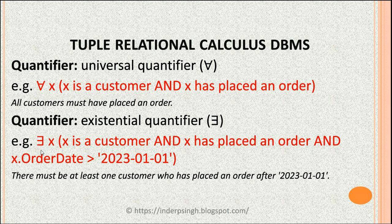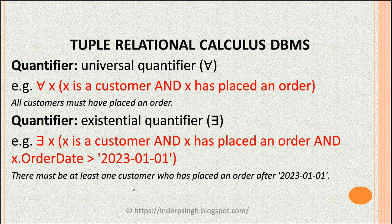An example of the existential quantifier: 'there exists x such that x is a customer and x has placed an order and the order date is greater than 1st January 2023.' Using the existential quantifier means there must be at least one customer who has placed an order after 1st January 2023.